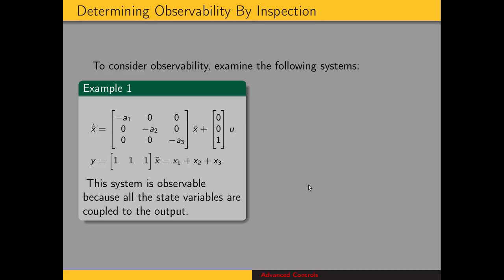Let's look at observability for a system. Here we have a system with a state-space representation with a diagonal state matrix. The input matrix and output matrix is all 1's. So the output equation is x1 plus x2 plus x3. This system is observable because all the state variables are coupled to the output.